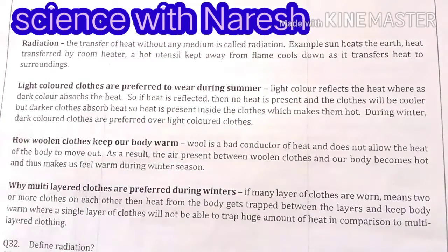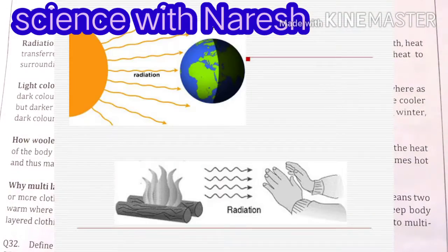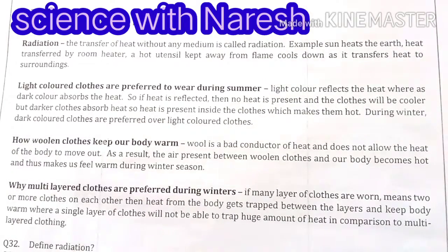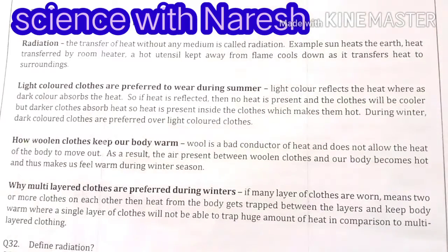When an object reflects heat it becomes cool, so light colored clothes make us feel cool. Dark colored clothes absorb heat, so heat gets captured between our body and the layer of dark colored clothes — that is why dark colored clothes are preferred during winter.